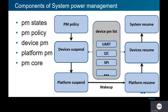Let's look at the components of the system power management. There are five components: the first is PM state, the next is PM policy, then device PM and platform PM, and the last one is PM call. Every component in the framework is shown in the diagram on the right. I will introduce every component in detail in the next slides.